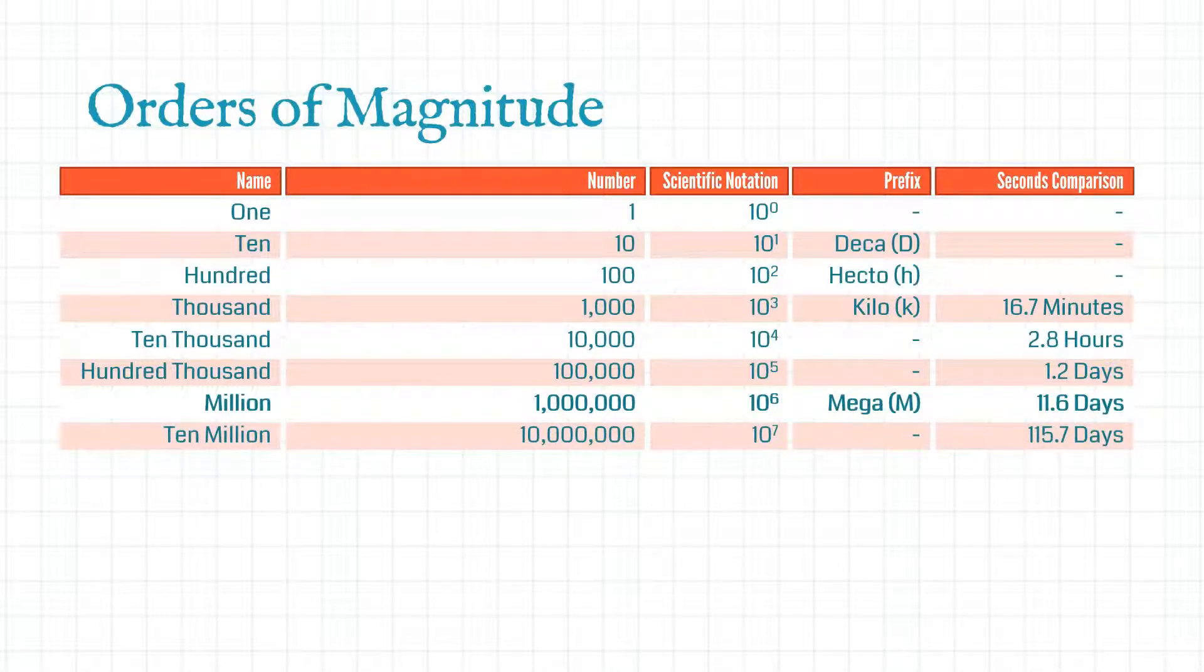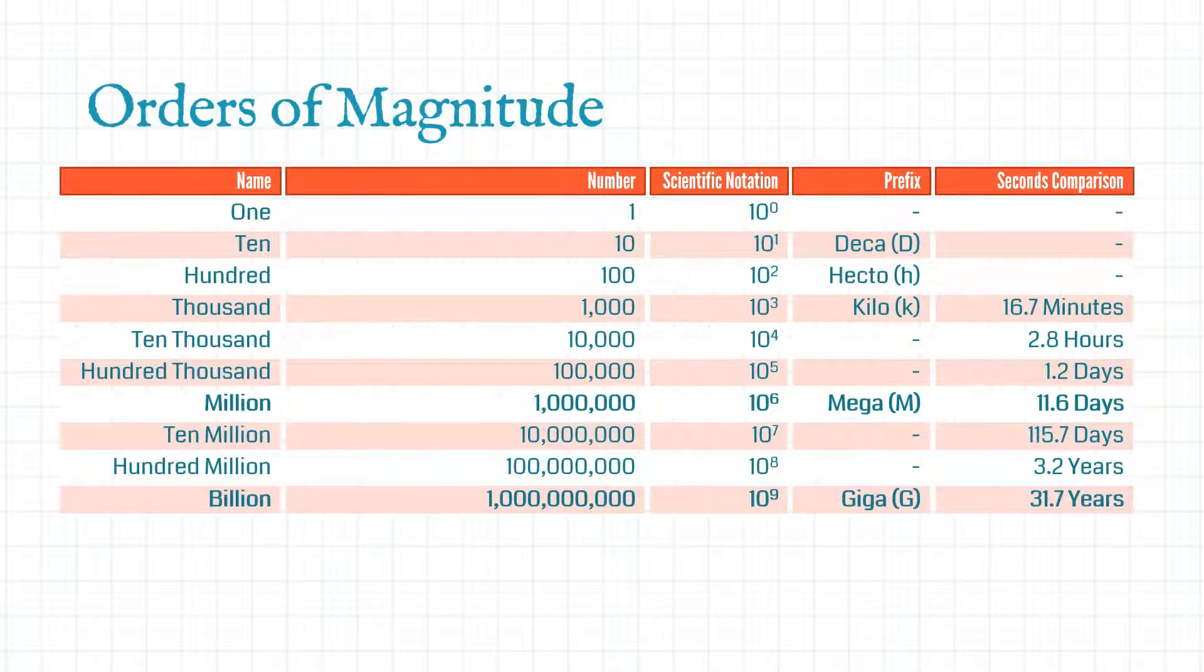Skipping forward a bit, the next number we're really interested in is one billion. Because of the way we write the numbers, a billion doesn't really look that much bigger than a million. It's just a few extra zeros here and there. Even with the scientific notation it's only three numbers more than a million. Ten to the six goes to ten to the nine. How much bigger can it really be? But when we work it out in seconds we realize that it's 31.7 years.